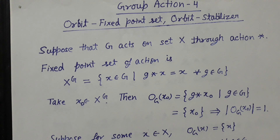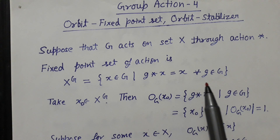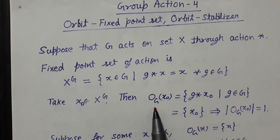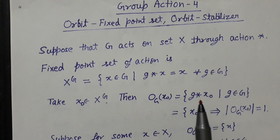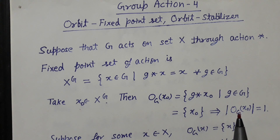Suppose G is a group acting on a set X through an action star. The fixed point set X_G is defined as those x in X such that g star x equals x for all g in G. Now suppose we take an element x₀ in the fixed point set. The orbit of x₀ by definition is {g star x₀ : g in G}, but since x₀ is in the fixed point set, g star x₀ equals x₀. So the orbit of x₀ has order one.